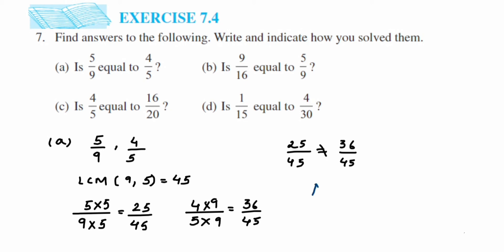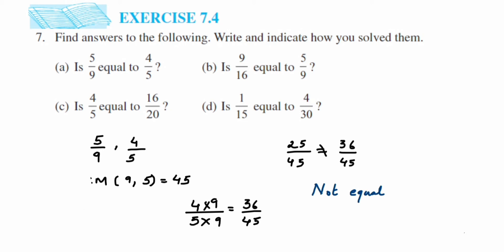You'll notice we got the same numbers — 25 and 36 — as when we did the cross multiplication method. So you can do it quickly that way, or use this longer method for the exam.